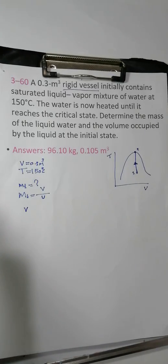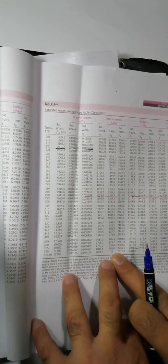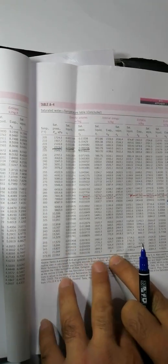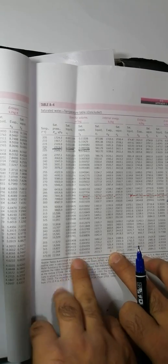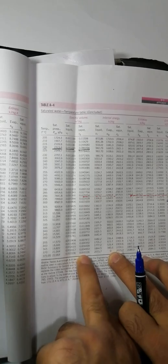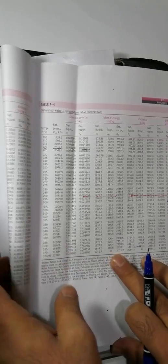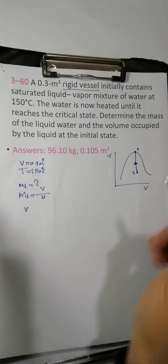If you take the temperature table, the critical volume is 0.0416.